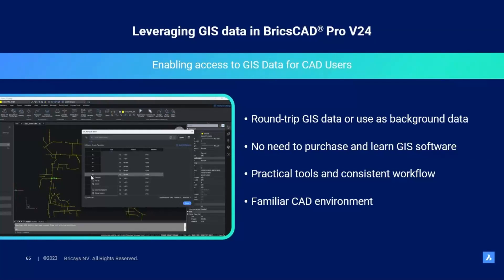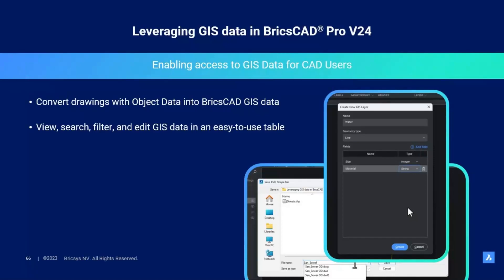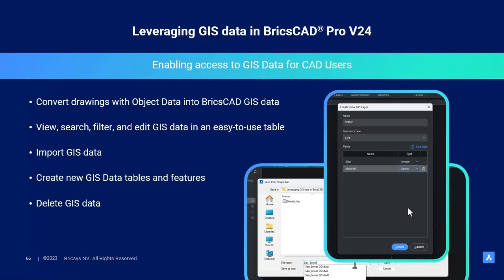No need to purchase and learn specific GIS software — you can leverage the CAD tools you already know and love in BricsCAD to work with GIS data. Whether you are creating and managing GIS data and need to round-trip it from a GIS system, or simply using GIS data as a background, BricsCAD has practical tools with a consistent workflow. In this session we will show you how BricsCAD v24 can convert drawings with object data from old CAD Map and Civil 3D into BricsCAD GIS data, view, search, filter, and edit GIS data in an easy-to-use table, import GIS data, create new GIS data tables and features, delete GIS data, and export it. Let's get started.